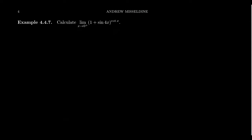Let's look at another example: the limit as x approaches 0 from the right of (1 + sin(4x)) raised to the cotangent of x. If we plug in x = 0, we get 1 plus sin(0) — which is just 1 — raised to cotangent(0). Cotangent has a vertical asymptote as you approach 0 from the right, so the exponent goes to infinity. This is the 1 to the infinity indeterminate form, which activates our strategy.